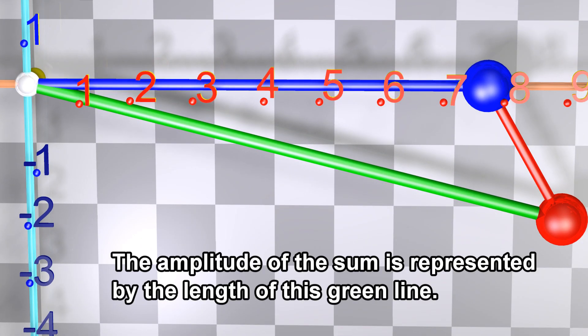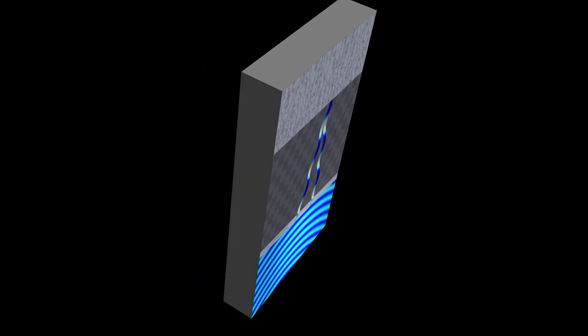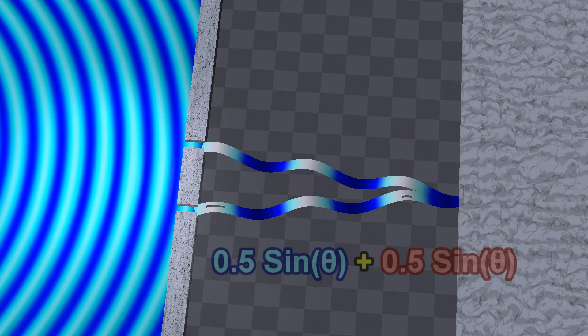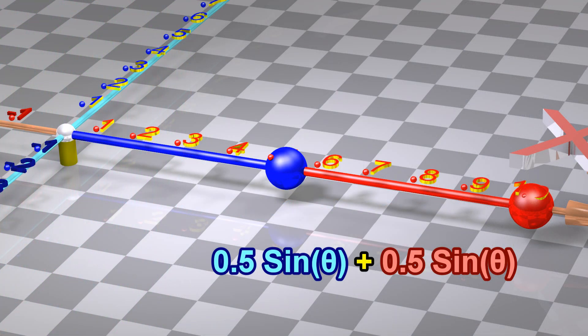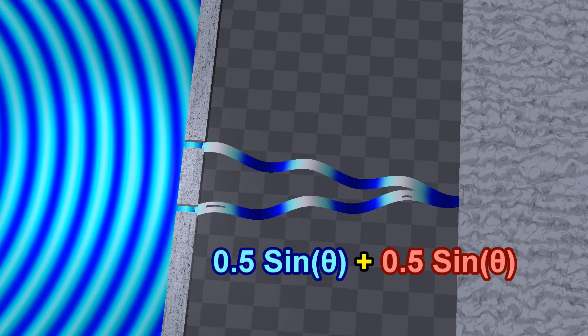The amplitude of the sum is represented by the length of this green line. In the case of the sine waves coming from our two small holes, the two waves have the same amplitude and frequency, but different phases.